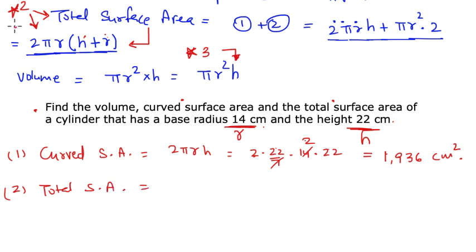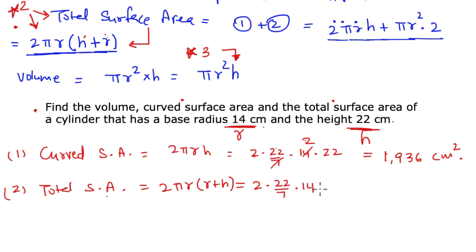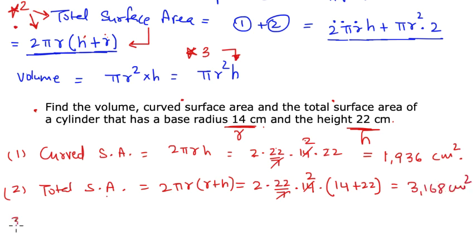Next, the total surface area. Applying the formula 2πr(r + h): 2 × (22/7) × 14 × (14 + 22). The 7 goes into 14 to give 2, and the computation gives a total surface area of 3168 cm².